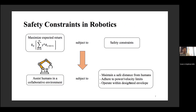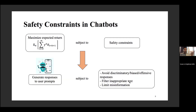Similarly for robotics, we want to accomplish some tasks and maximize expected return, but we have safety constraints such as maintaining a safe distance from humans. And in the foundation model era, when we talk about safety constraints in chatbots, we want to generate good responses to user prompts — maximizing some reward — but safety constraints require us to avoid biased responses or filter inappropriate text.